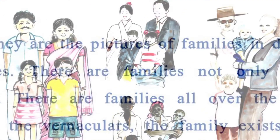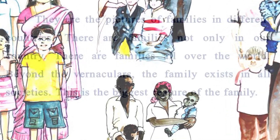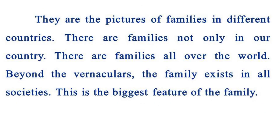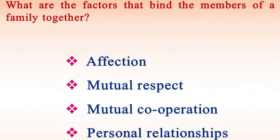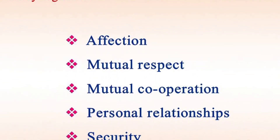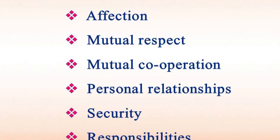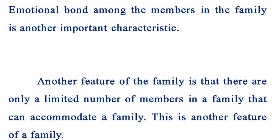These are pictures of families in different countries. There are families not only in our country but all over the world. Beyond vernaculars, the family exists in all societies — this is the biggest feature of the family. What are the factors that bind the members of a family together? Affection, mutual respect, mutual cooperation, personal relationships, security, and responsibilities. Emotional bonds among family members are another important characteristic. Another feature of the family is that there are only a limited number of members that a family can accommodate.